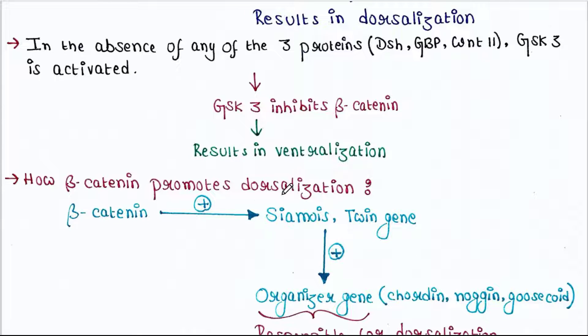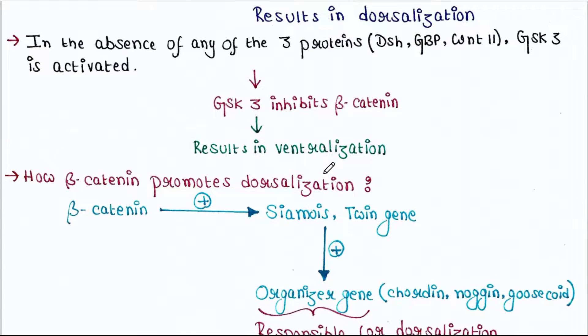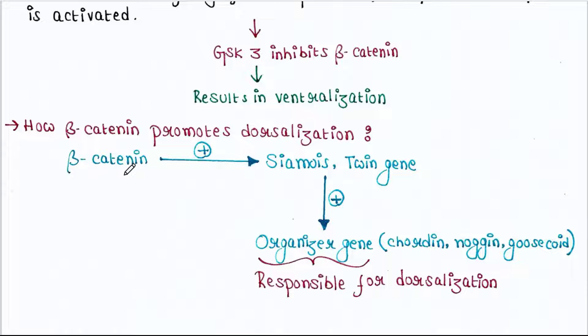How does beta-catenin promote dorsalization? Beta-catenin protein enhances the expression of Siamois and Twin genes. Those gene products ultimately will enhance the expression of certain organizer genes like chordin, noggin, and goosecoid. These genes are responsible for dorsalization. Hence, indirectly beta-catenin is responsible for dorsalization.